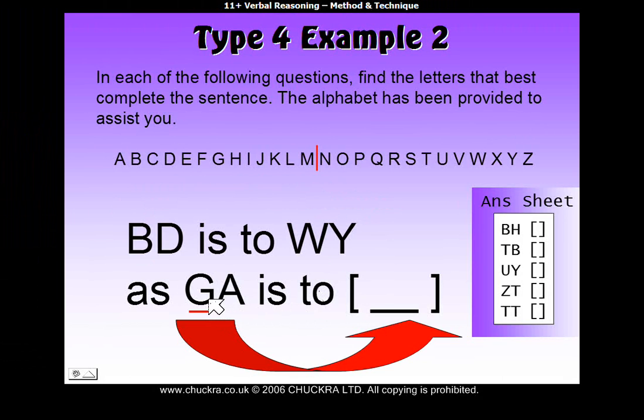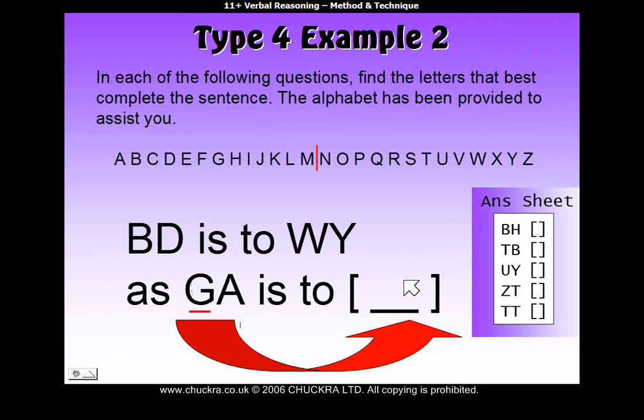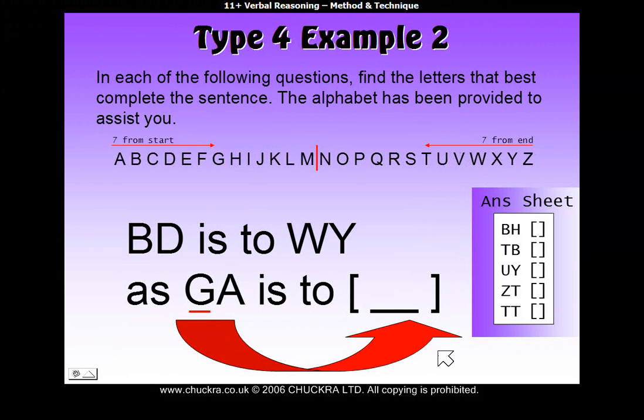Now, to find our answer, we have to go from G and find the partner letter for G, and that will be the second letter of our answer. Now, the partner letter for G. Now, G is the seventh from the start of the alphabet. So its partner letter must be seventh from the end of the alphabet. And that seventh letter from the end of the alphabet is 1, 2, 3, 4, 5, 6, 7, T. So we know that the second letter of our answer is T.